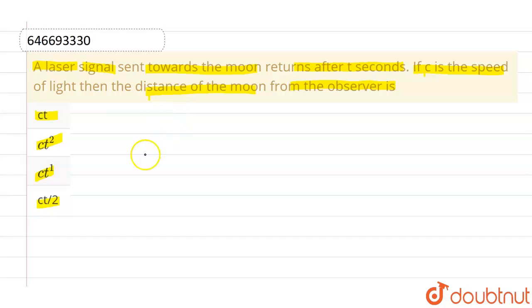Now, let us suppose that observer is located at here and let us say moon is here. And distance between moon and observer is let us say x. x is the distance between moon and observer.